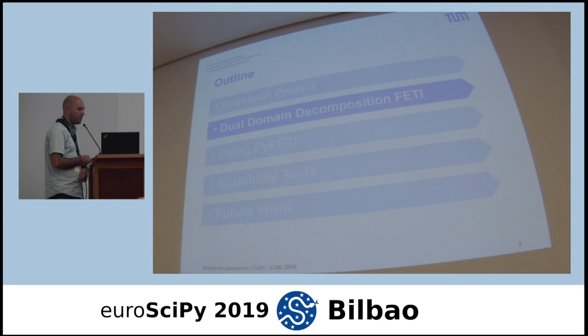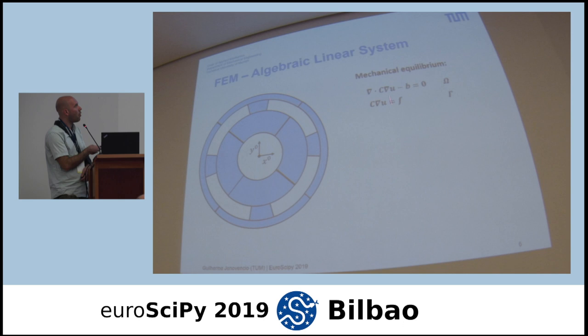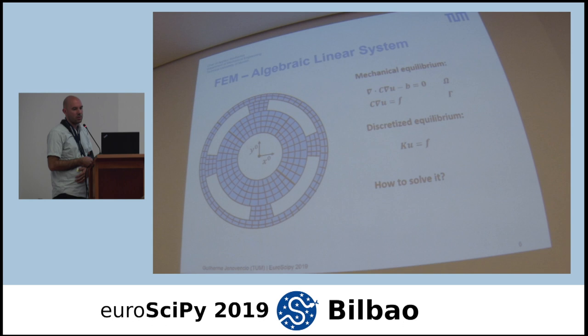How do we apply these dual domain decomposition methods? We start from the mechanical equilibrium — we have a component with a partial differential equation. We apply the finite element method and get a linear system of equations. This is simple linear algebra, but if you have one million or 55 million degrees of freedom, solving this system becomes a very big problem.